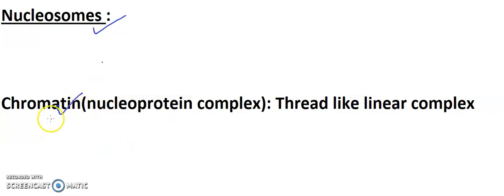Chromatin, these are basically thread-like linear complexes which consist of a protein molecule called histone protein, plus DNA.